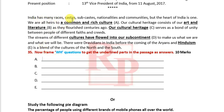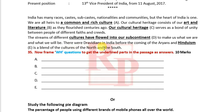Let's see the WH questions. The passage: 'India has many races, castes, sub-castes, nationalities, and communities, but the heart of India is one. We are all heirs to a common and rich culture. Our cultural heritage consists of our art and literature. As they flourished centuries ago, our cultural heritage serves as a bond of unity between people of different faiths and creeds.'